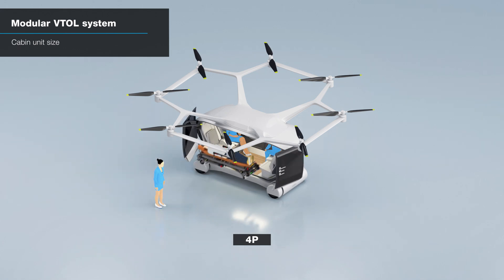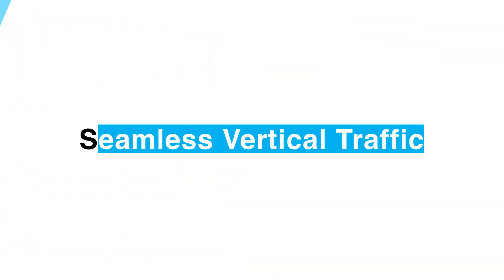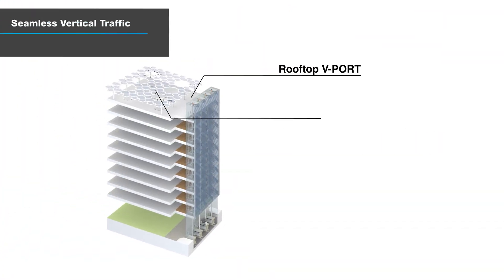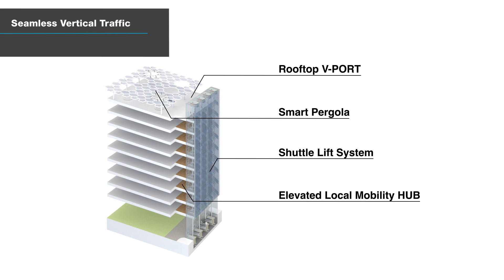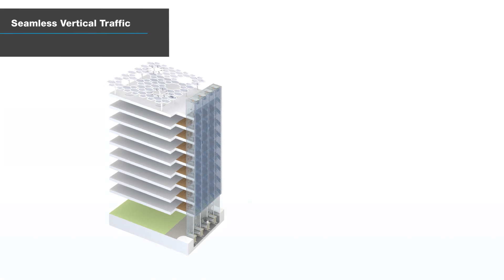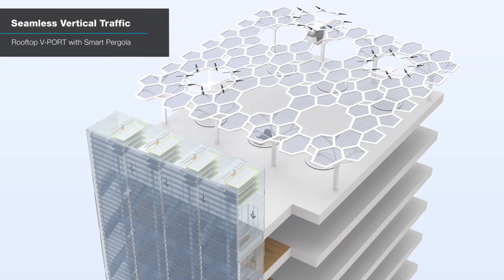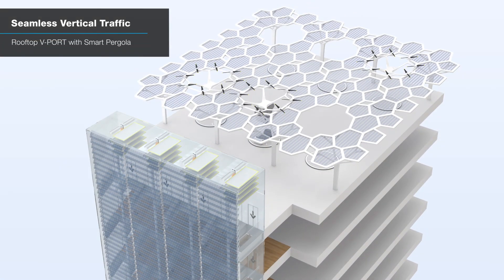It can also accommodate an emergency stretcher. The seamless transportation to all floors can be achieved by expanding the original concept of a vertical traffic system to the V-port on the rooftop. Each smart pergola cell is designed to be the same shape as the propeller unit and enables the propeller unit to stand by on the smart pergola.